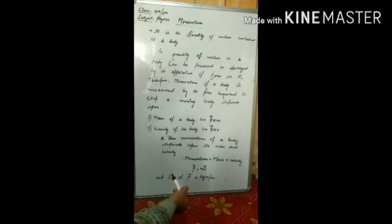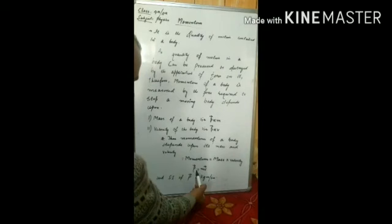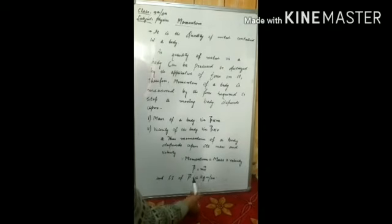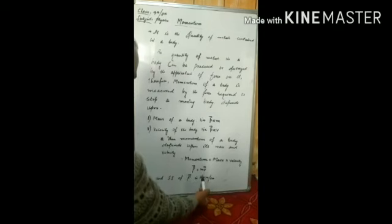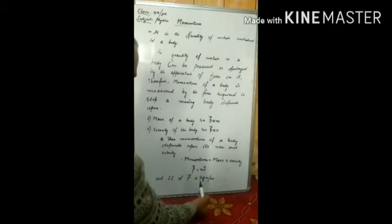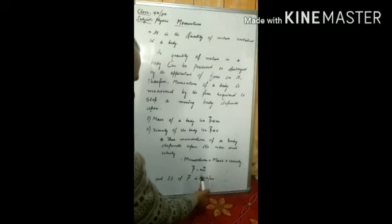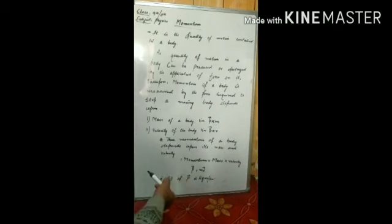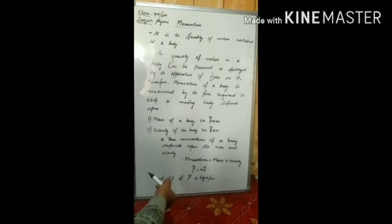So the SI unit of momentum - as we know that momentum depends upon mass into velocity, so we can say its SI unit will be kg meter per second, because the unit of mass is kg and the unit of velocity is meter per second. So the unit of momentum is kg meter per second.